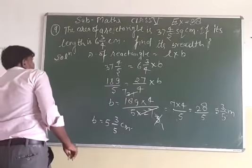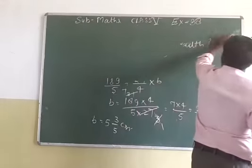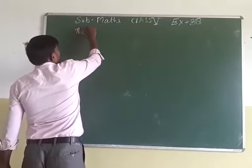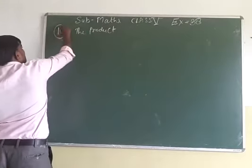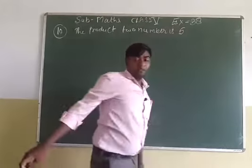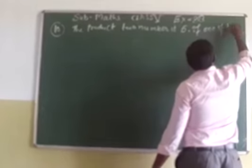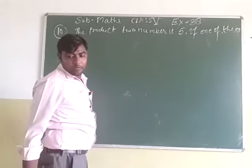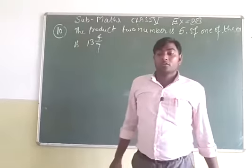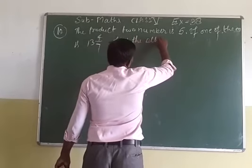Now let's talk about the next question. Question number 10: The product of 2 numbers is 5. If one of them is 13 whole 4 upon 7, find the other number.